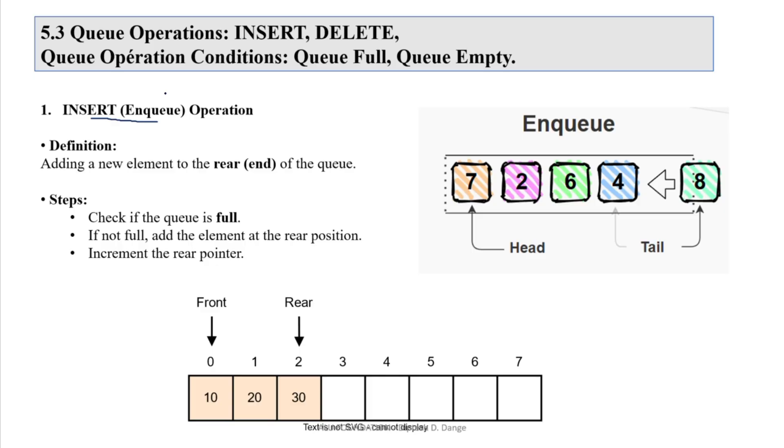So element is always inserted at the rear end. It means tail, which we have to insert. Adding a new element to the rear end of the Queue. Rear end means what is that? Pointers.